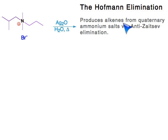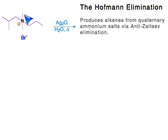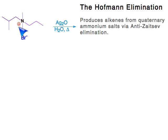Elimination produces alkenes from quaternary ammonium salts via anti-Zaitsev elimination. This is a nitrogen with four R-groups attached: two methyl groups, a propyl group, and an isobutyl group. That makes it a quaternary amine, and the nitrogen has a positive formal charge connected to a bromide ion — a positive and a negative — making it a quaternary ammonium salt.